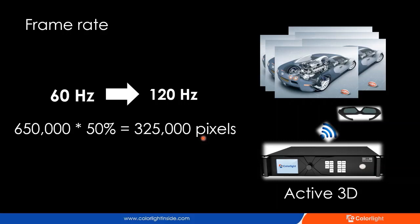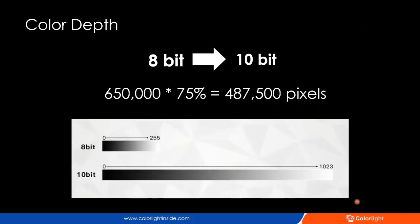When making a project for 3D, we need to double the number of controllers. Color depth is another factor affecting loading capacity. As the color depth increases, each pixel means more data needs to be transmitted. For example, if the video color depth increases from 8-bit to 10-bit, the image will get more details, but the amount of data for each color is increased and the pixel capacity is reduced. In our system, when the video color depth is increased to 10-bit, the loading capacity of each output port is 75% of the 8-bit capacity.